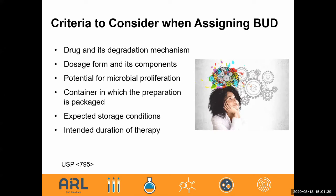What are some criteria to consider when assigning a BUD? From USP 795, there are many things to consider. You assign your BUD based upon scientific data, but things that can affect the stability, beyond-use date, expiration date, or in-use time include: the drug and its degradation mechanisms — does it have a propensity to decompose? — the dosage form and its components, and the potential for microbial proliferation. While there is a lot of emphasis on sterility and microbial proliferation, I encourage you not to make decisions in a vacuum.